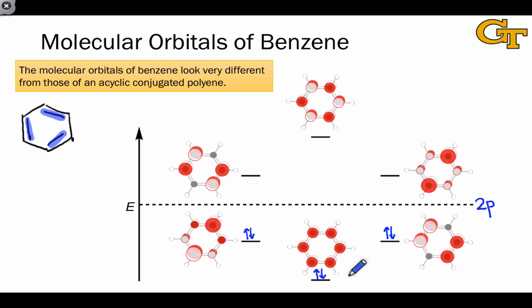The pi molecular orbitals are still composed of p orbitals, but now because they overlap in a cyclic manner, we get a different pattern. It's not simply levels going up. We have what's called degeneracy, with multiple levels or multiple orbitals having the same energy.